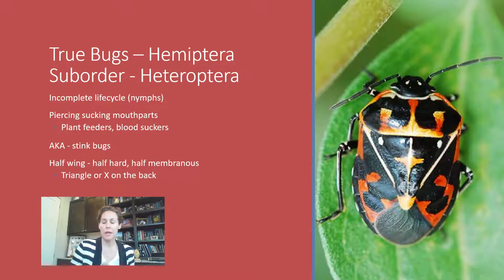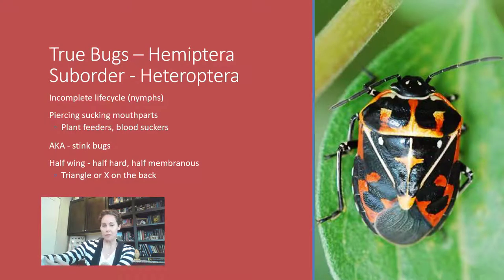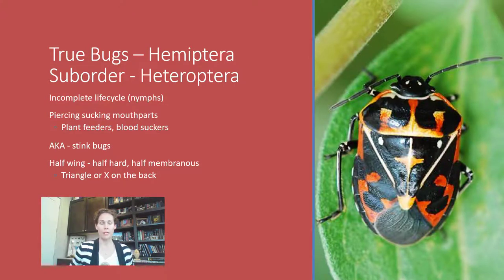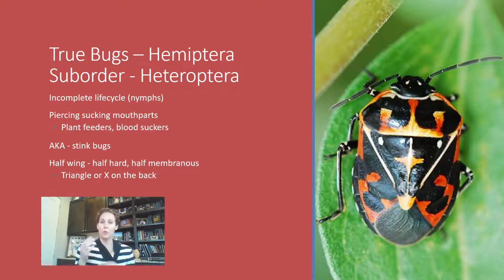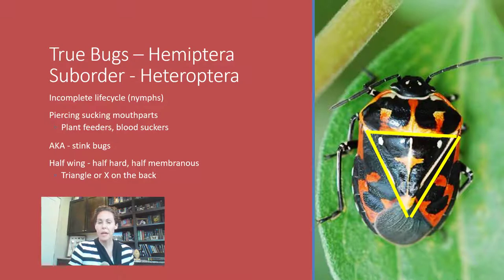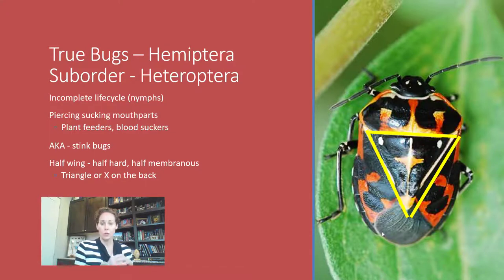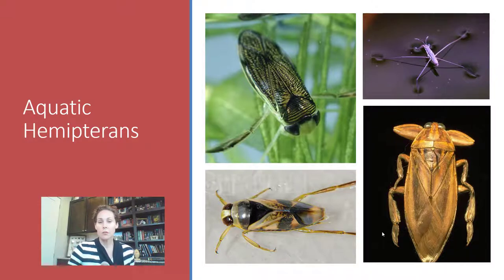In the suborder Heteroptera — the stink bugs and true bugs — half of their wing is hard and the other half is membranous or soft. They fold their wings over their back, forming a little triangle where the wings don't overlap one another. You can see this triangle on the harlequin bug. The bottom portion of the wings where the membranous parts overlap has a different texture. Always look for the triangle or that change in texture or color at the tip to identify a stink bug or true bug.